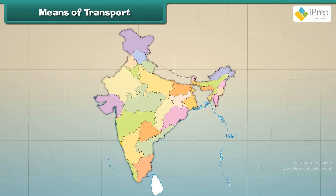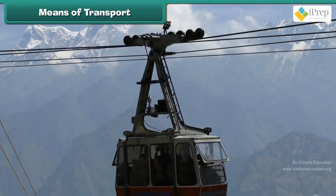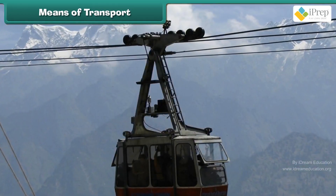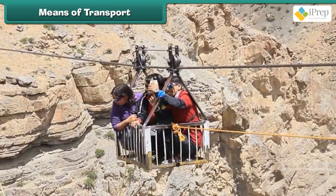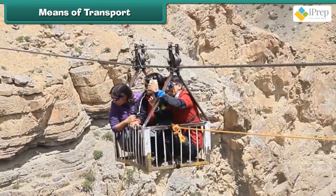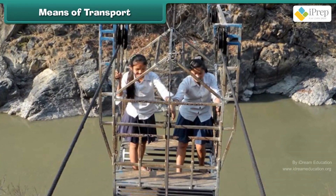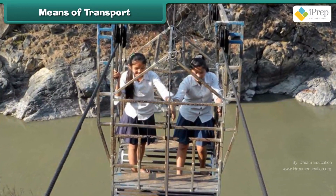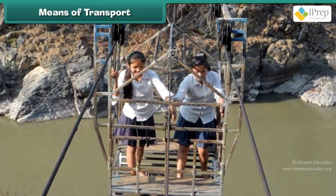In hilly areas such as Jammu and Kashmir, Leh and Ladakh, people use a trolley to travel from one place to another. The paths are rocky and uneven. Children who live in hilly areas find it easy to walk on these rocky surfaces.